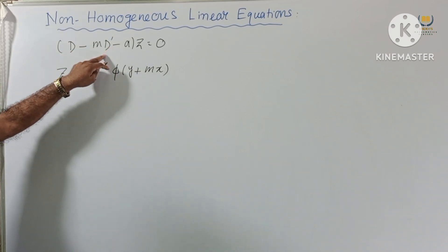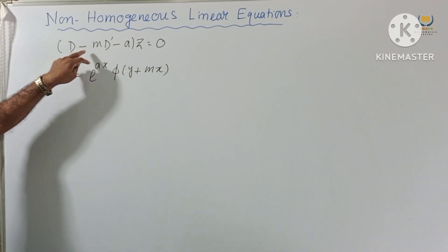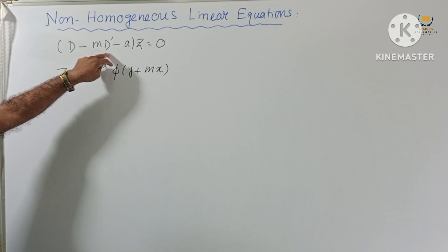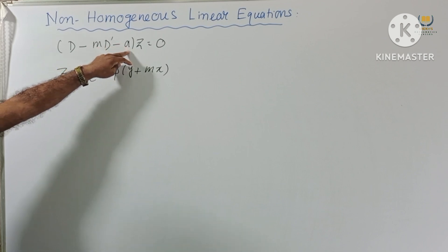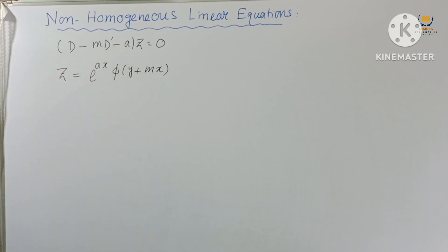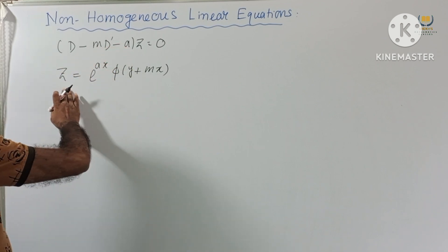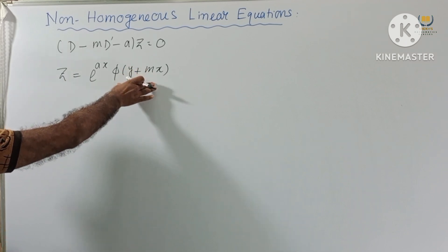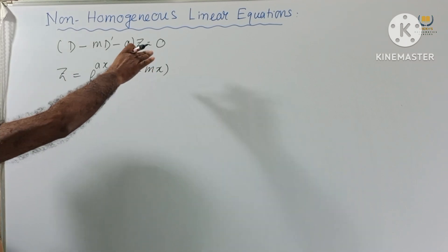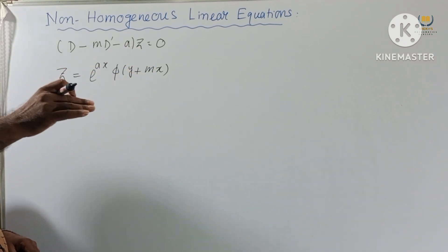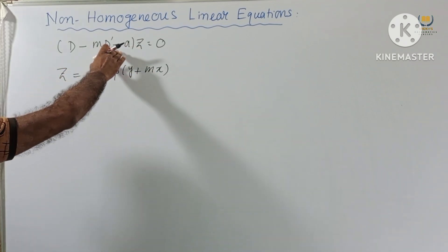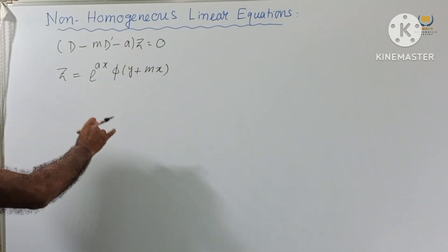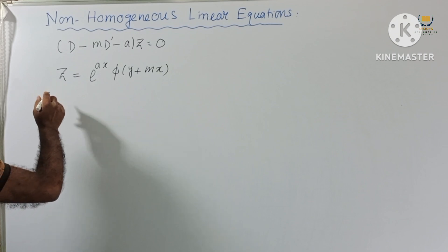This is non-homogeneous because we get a constant term here. So if we get this type of equation, then the solution is as written. This result comes directly from the proof.